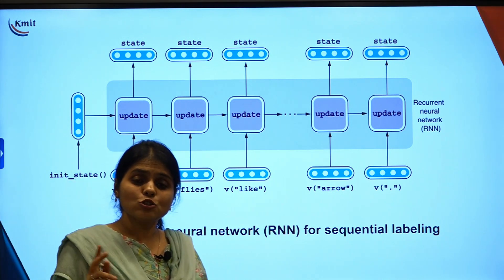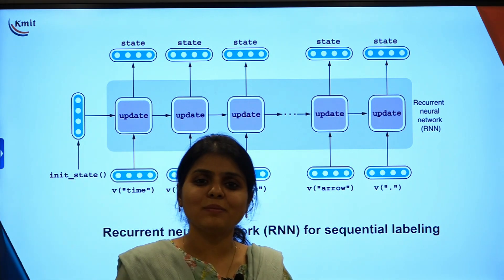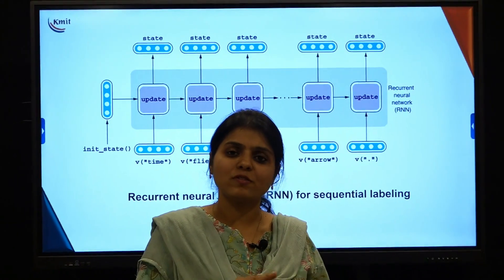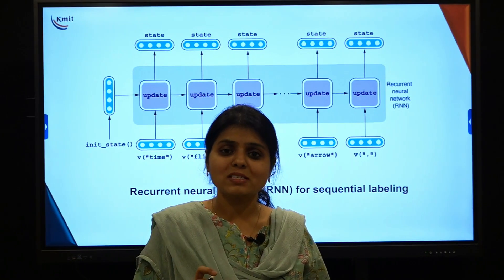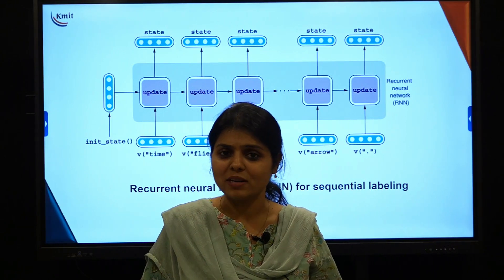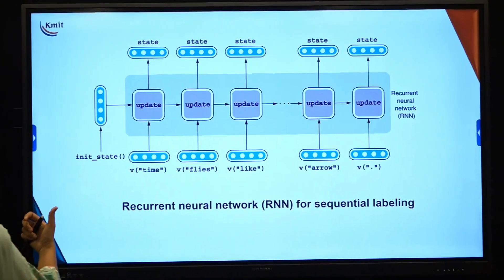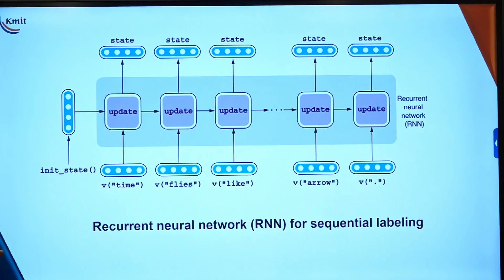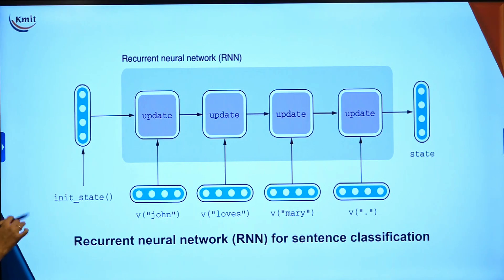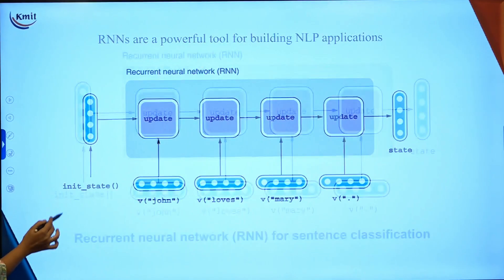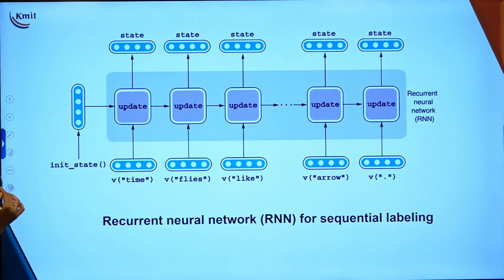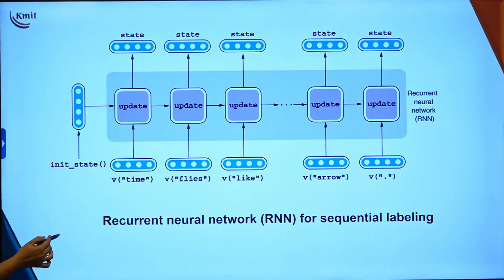The two most important tasks of sequential labeling are POS tagging and NER. POS tagging was discussed in the last session — what it is, how it is useful, and how to generate POS tags using libraries. So that is what we covered: how to use basic RNN for sentence classification and how to use the same RNN architecture for sequential labeling.